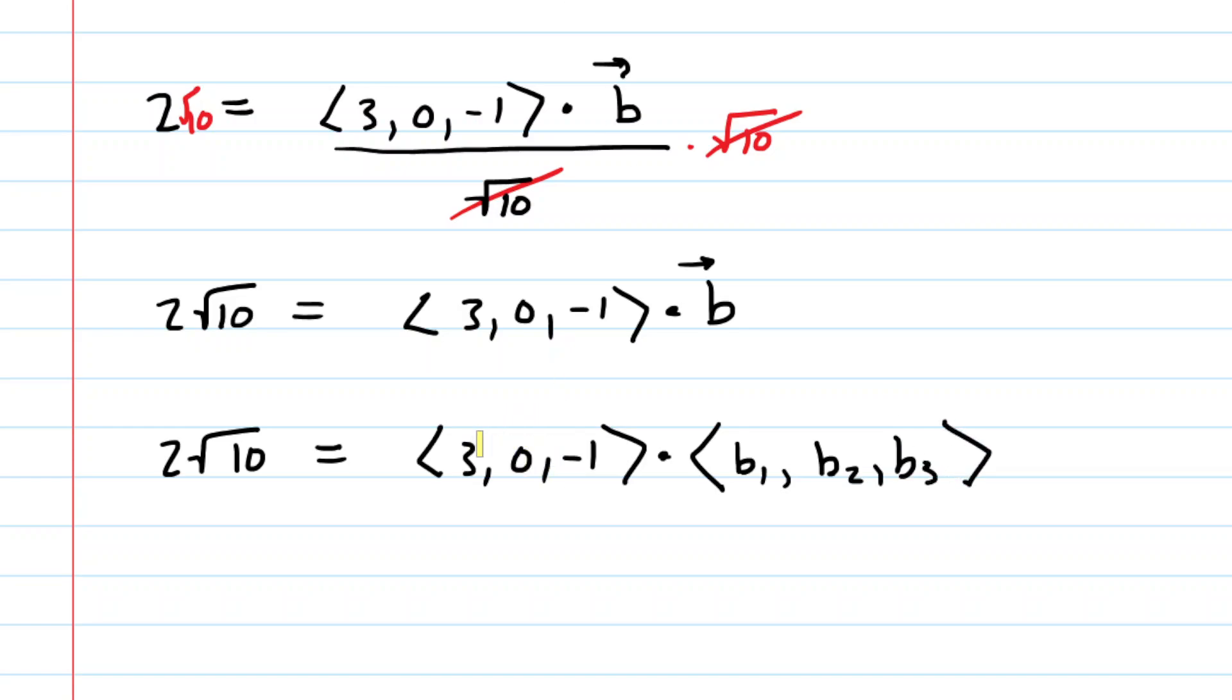It's very easy to do this because you just take the X components of the two vectors and you multiply them together. So you would have 3 times B1. Then you take the Y components of each vector and you multiply those. So here we're just going to have 0, B2, and then finally we take the Z components of the vectors and we multiply them. So we're going to have minus 1, B3. This is all still equal to 2 square root of 10.